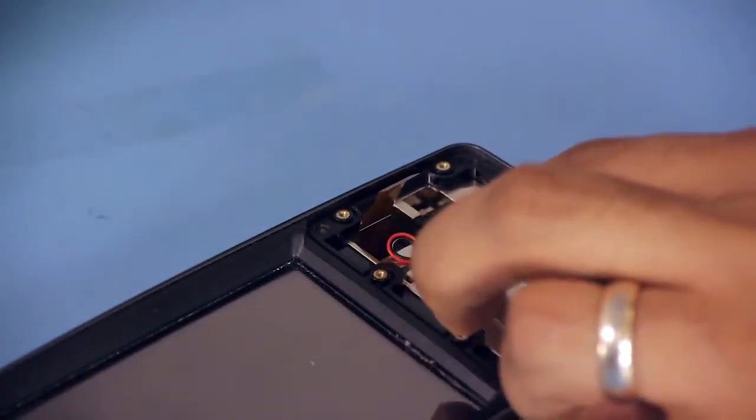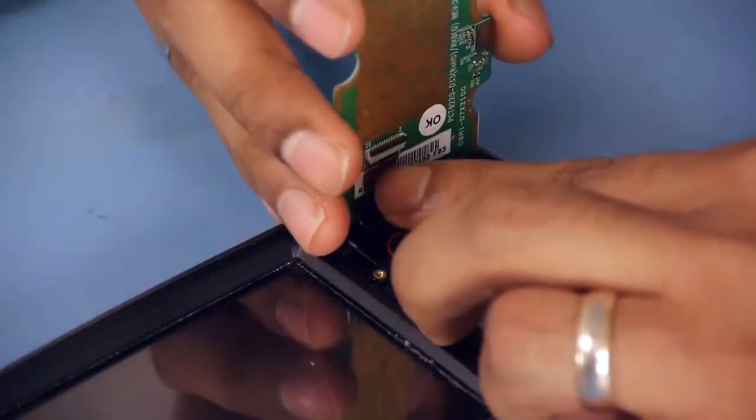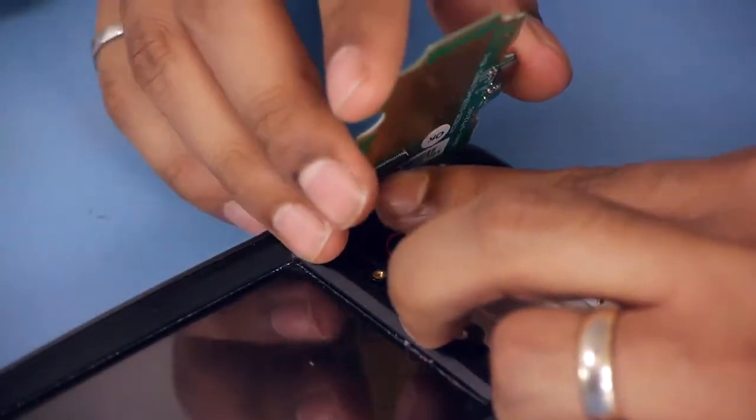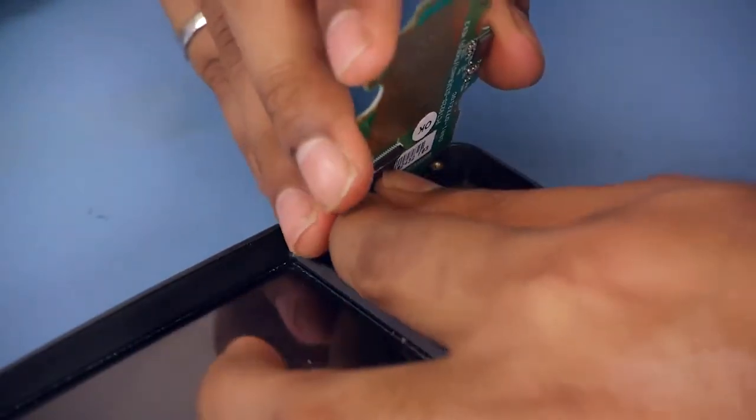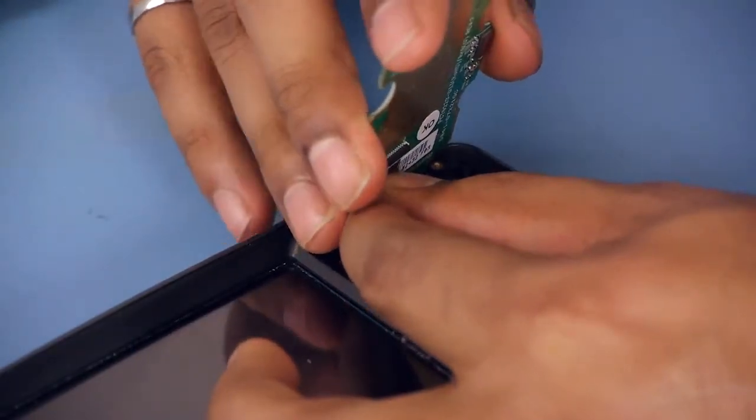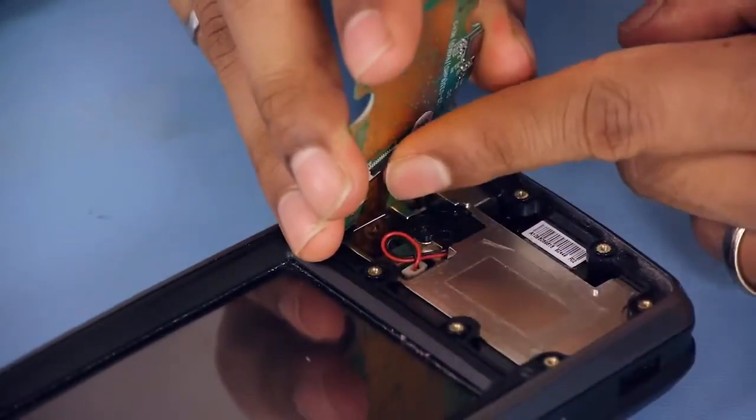And then you get your new QWERTY keypad PCB. Install the flex firmly. As you can see, there's a white line on the flex. Make sure it's fully inserted. Close the latch.